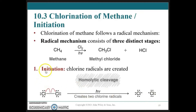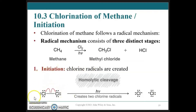In the initiation stage, we have a net increase in the number of radical species. At the start of the reaction, on the reactant side, we have zero radical species. Then after homolytic cleavage, we have two radical species — that's an indication that this is initiation.